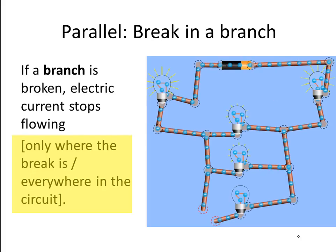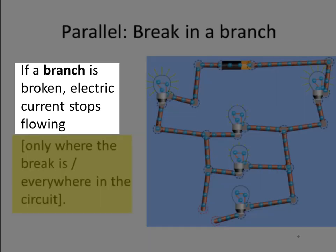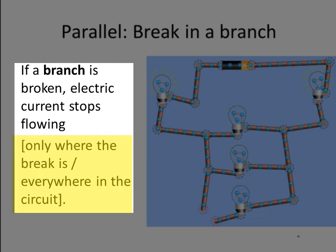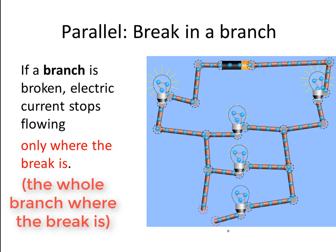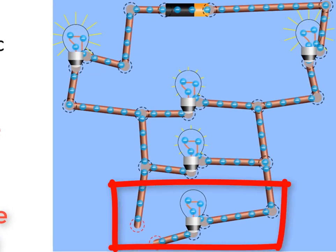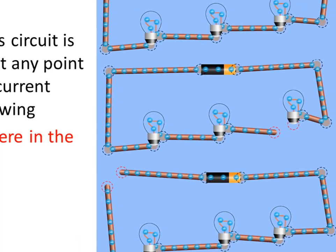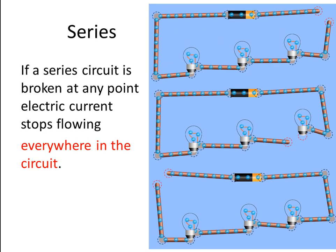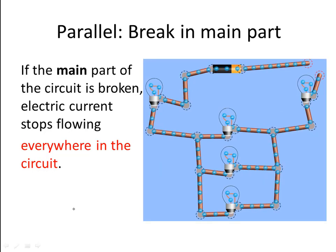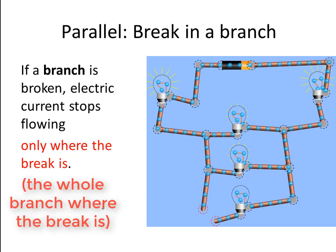Let's summarize: if a branch is broken, electric current stops flowing only where the break is — not everywhere in the circuit. That branch is broken, current doesn't flow there, that bulb doesn't shine, but everywhere else current continues to flow and the other bulbs continue to shine. To recap: in series circuits, anywhere you break it, that breaks everywhere — current stops flowing everywhere and all the bulbs stop shining. For parallel circuits it depends: break it in the main part and the same effect occurs as with series — everywhere the current stops. But break it in a branch, and only that branch stops flowing; the current only stops in that branch, but not in other branches.